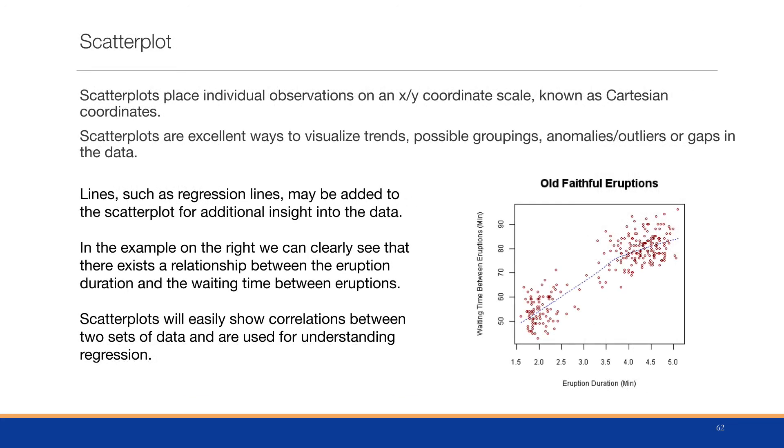Scatter plots place individual observations on an XY coordinate scale, known as Cartesian coordinates. Scatter plots are excellent ways of visualizing trends, possible groupings, anomalies, outliers, or gaps in the data.